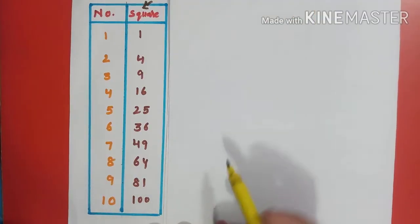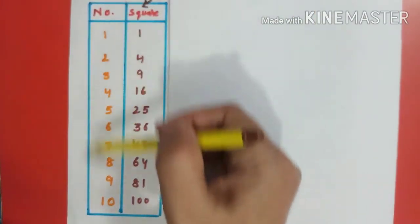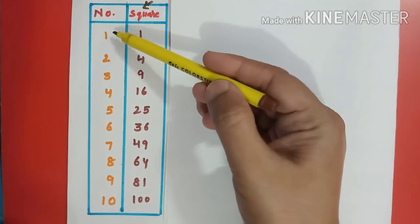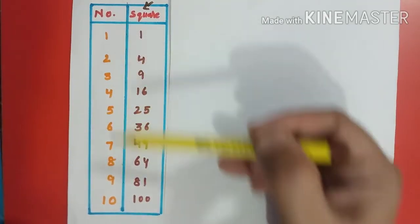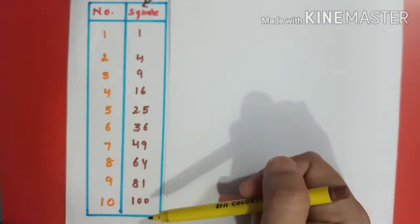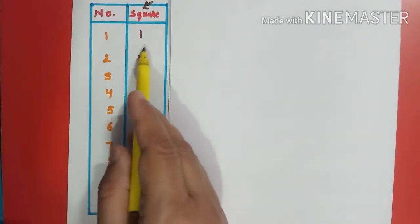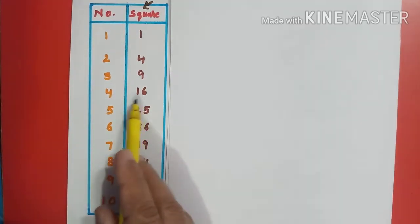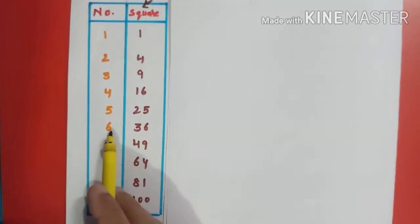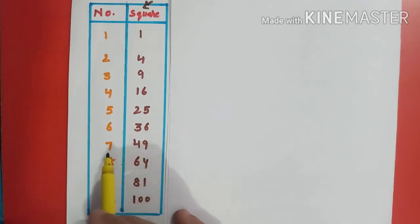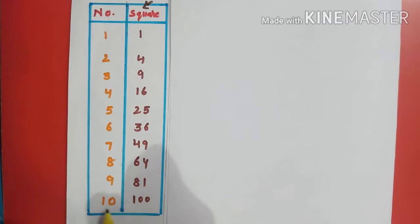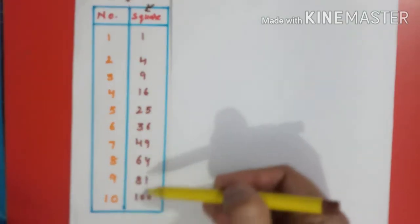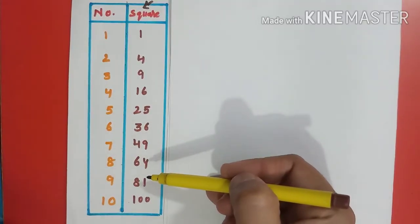Now students, see this list of squares of numbers 1 to 10. 1 square is 1, 2 square is 4, 3 square is 9, 4 square is 16, 5 square is 25, 6 square is 36, 7 square is 49, 8 square is 64, 9 square is 81, 10 square is 100. These are the squares, and you can also call them perfect squares.